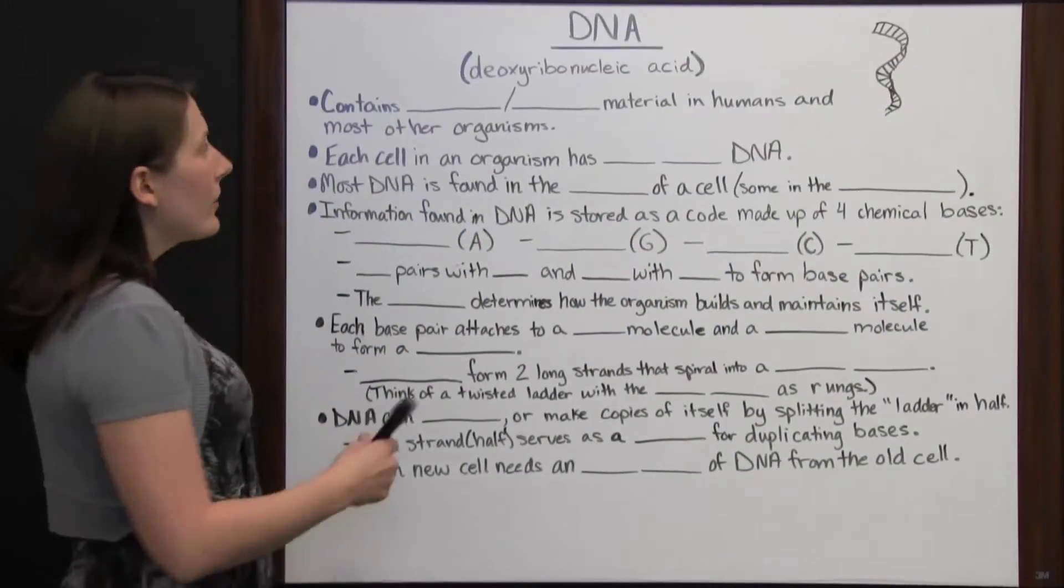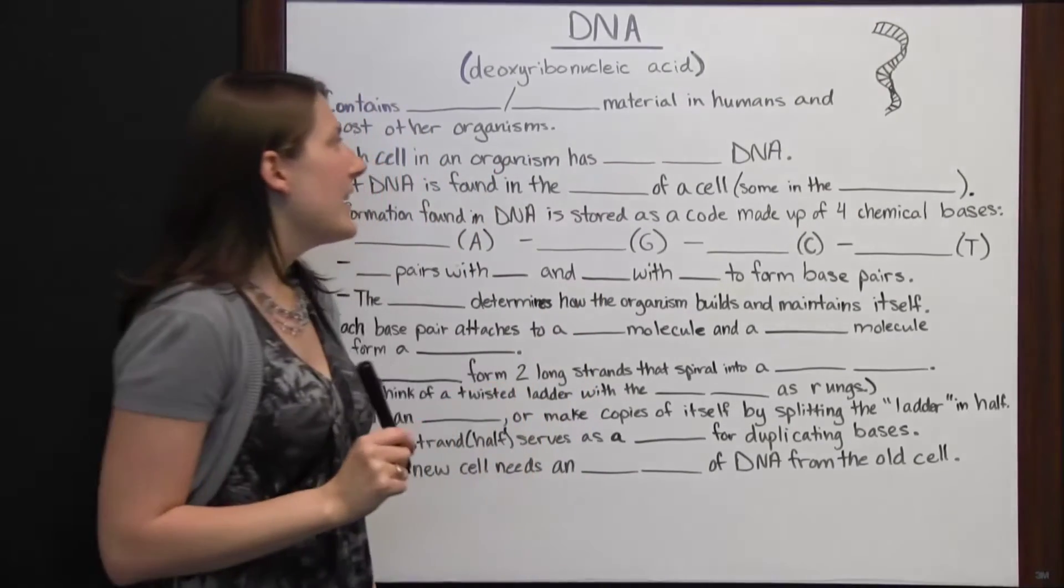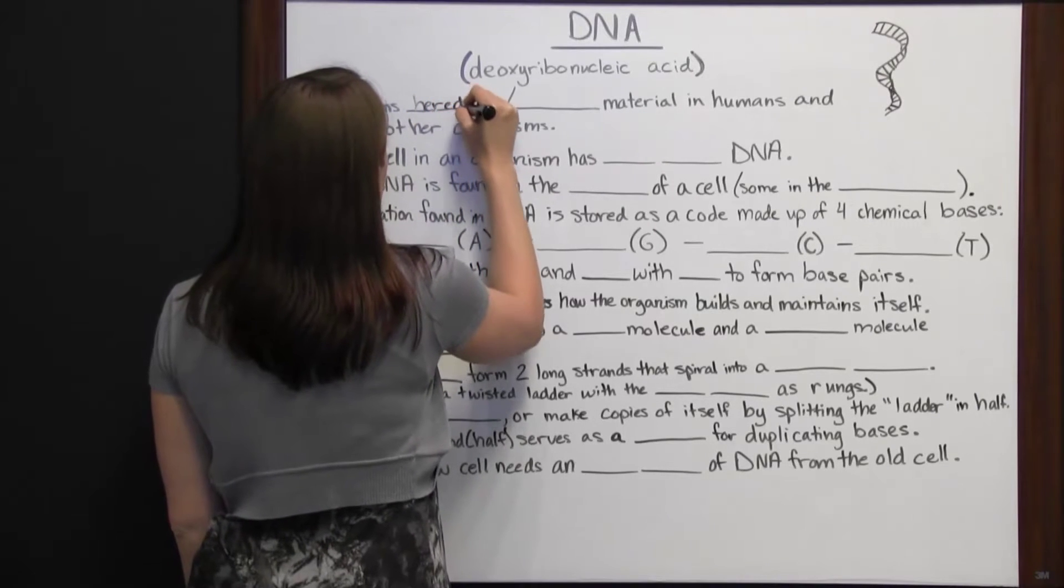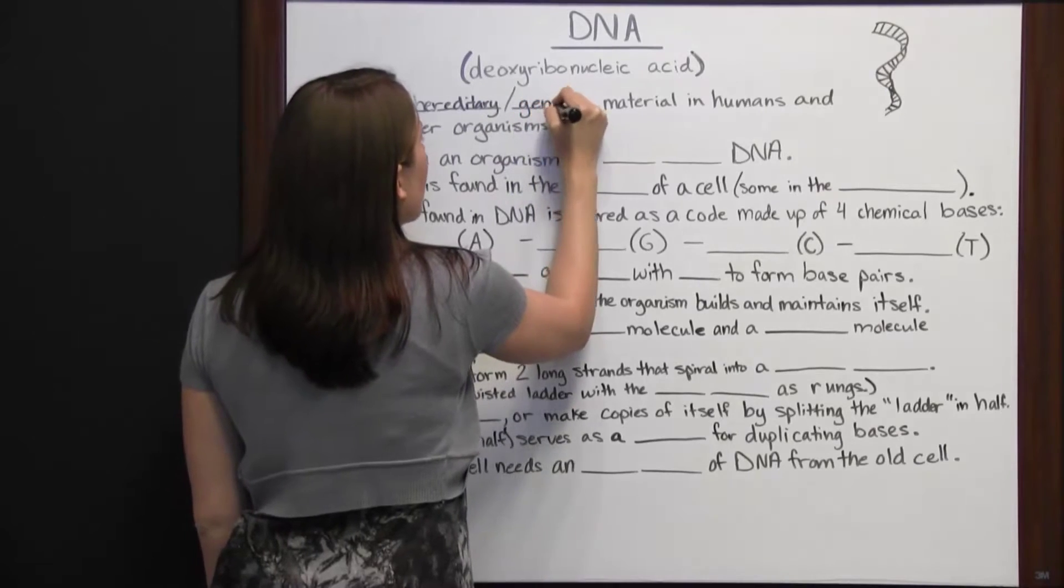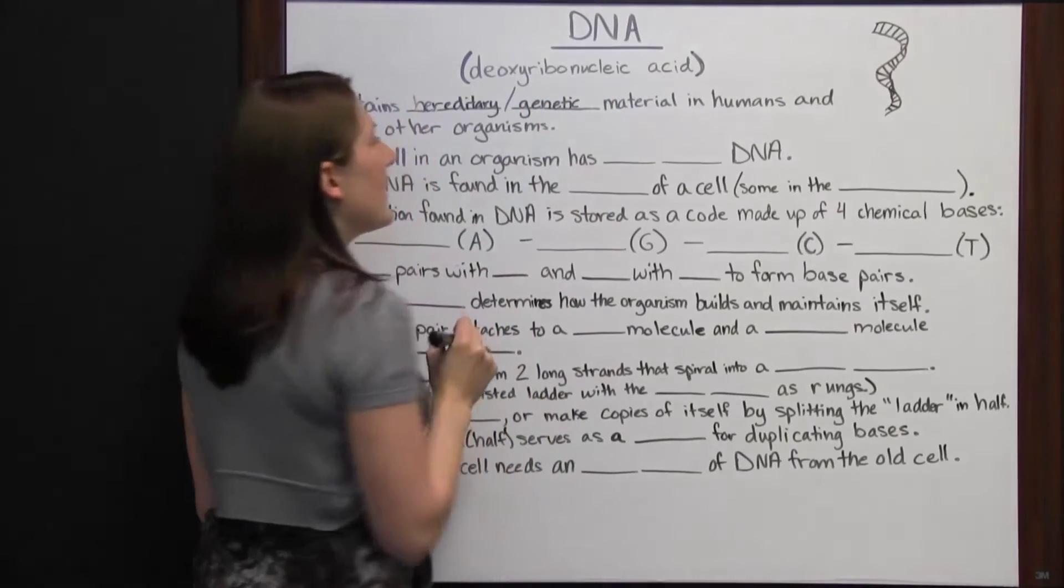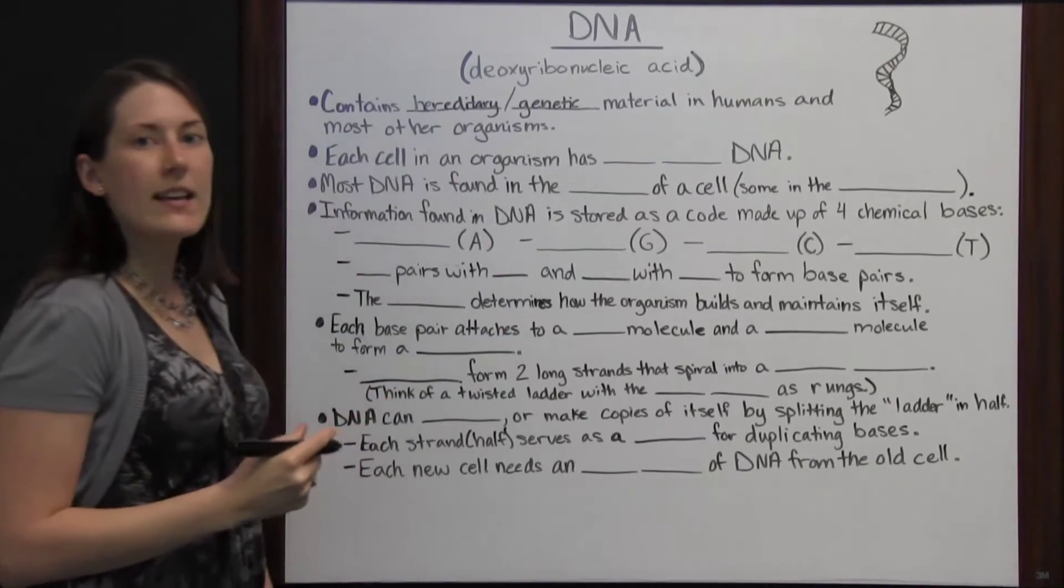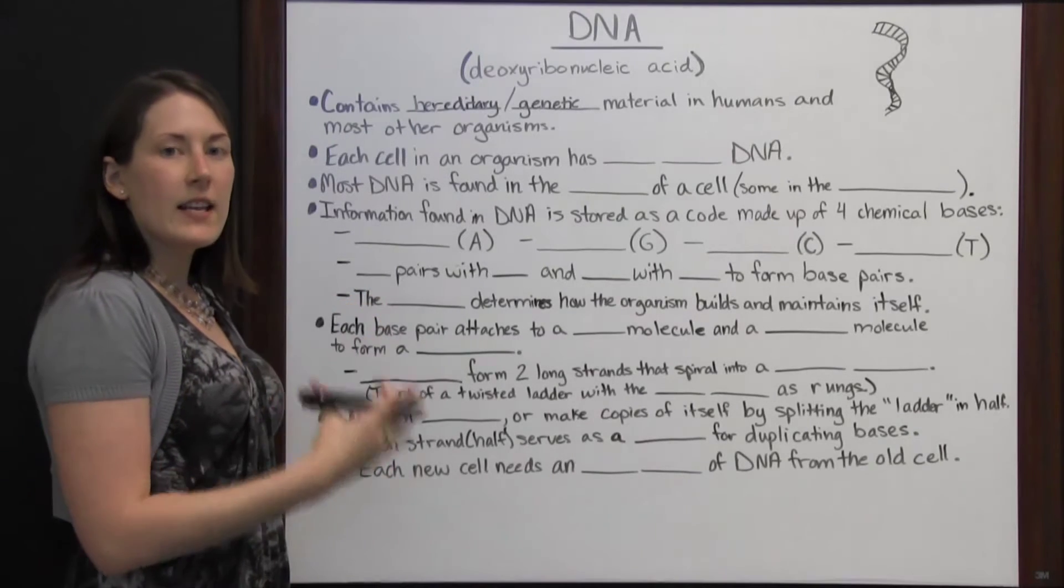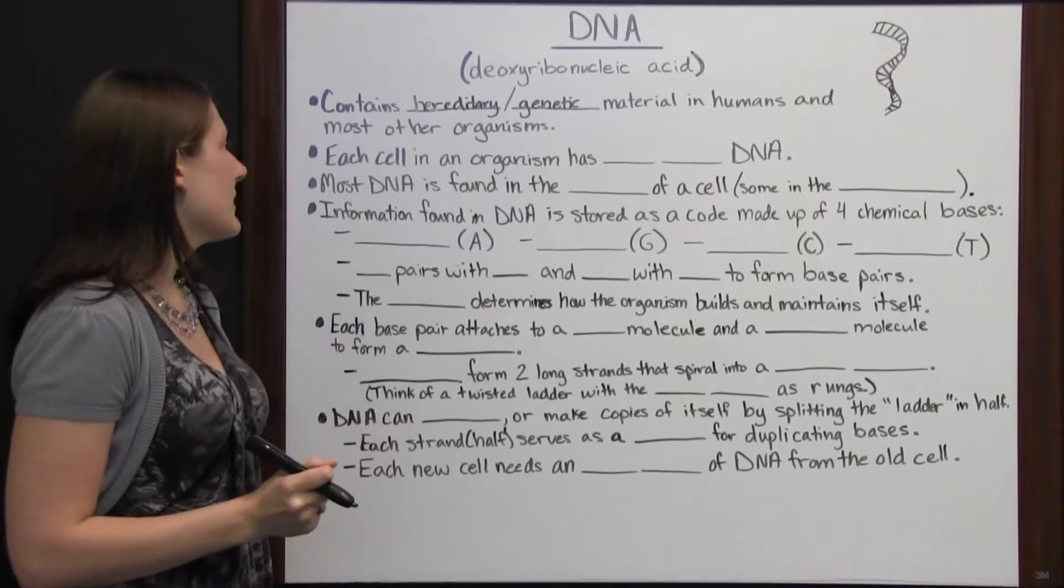DNA, or deoxyribonucleic acid, contains all of the hereditary or genetic material in humans and most other organisms. The DNA is what lets people know what genetic material is in a person or is in a certain creature or other organism.